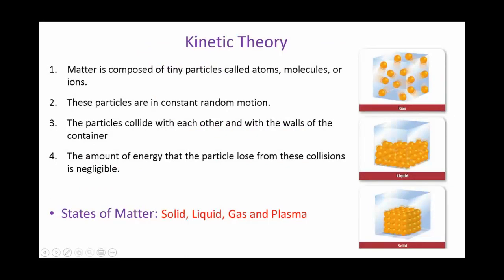The kinetic theory mentions that matter is composed of very small tiny particles, which are atoms, molecules, or ions. In the case of metals, for example, it will be the atoms. In the case of liquids, it will be the molecules. And in the case of plasma, for example, it will be the ions, as we will see.